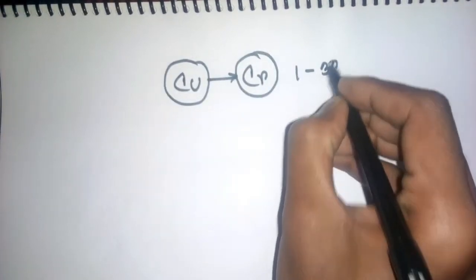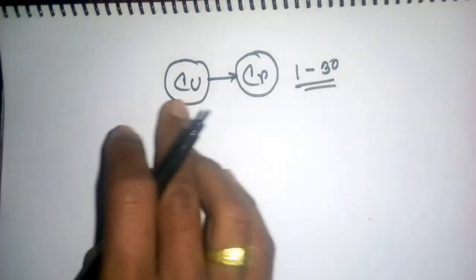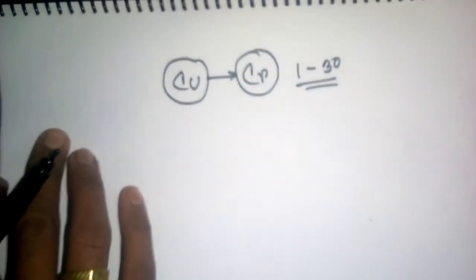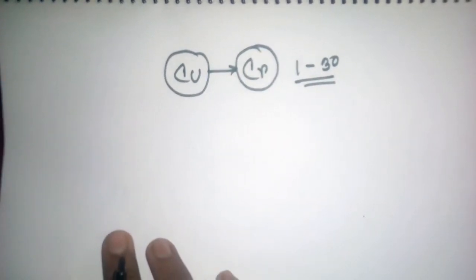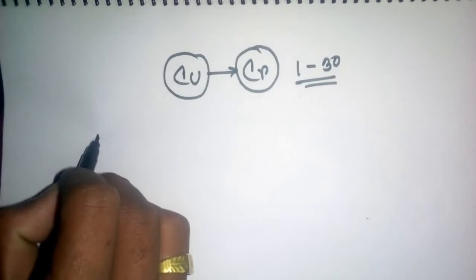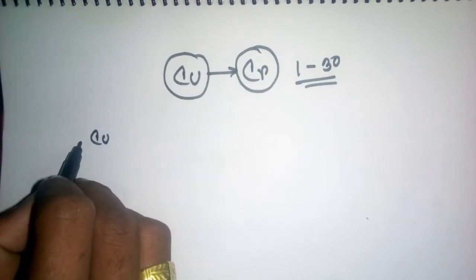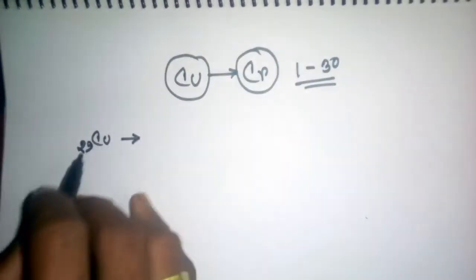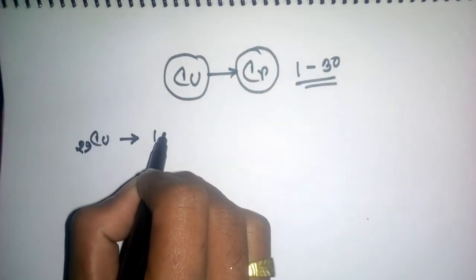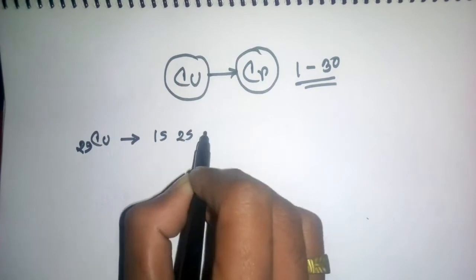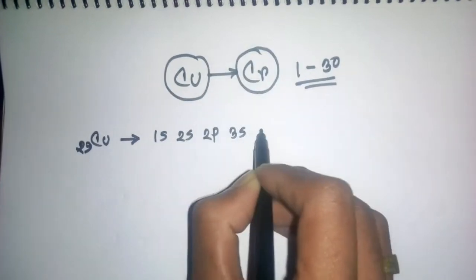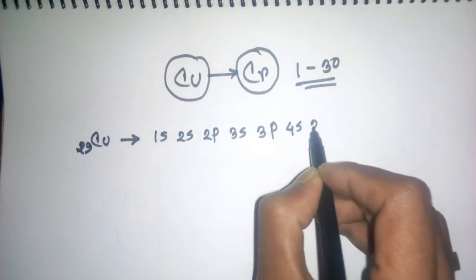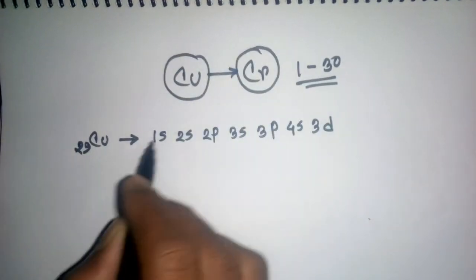The activity, electron configuration of the system. Copper and chromium. How the electrons are distributed. For copper, the electron configuration is: 1s², 2s², 2p⁶, 3s², 3p⁶, and then we have 4s and 3d.